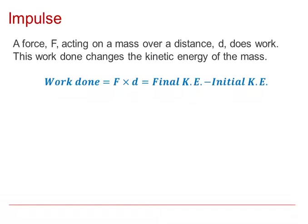Previously we've seen that if a force F acts on a mass over a distance D, then work is done by that force. The work done by that force changes the kinetic energy of the mass. So the work done by the force equals force times distance, and that is final kinetic energy take away the initial kinetic energy.